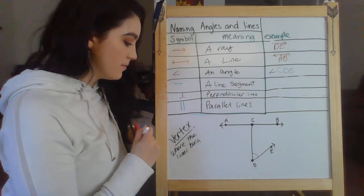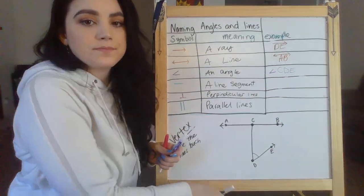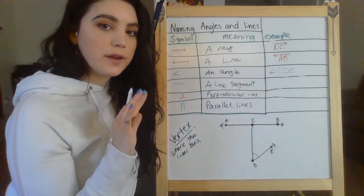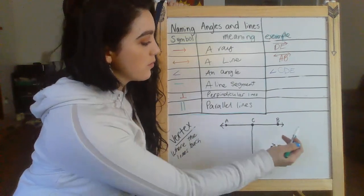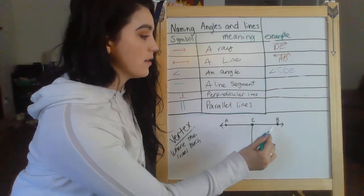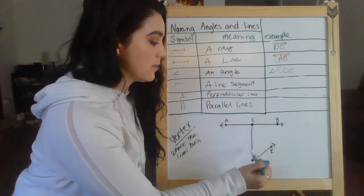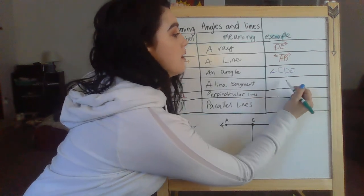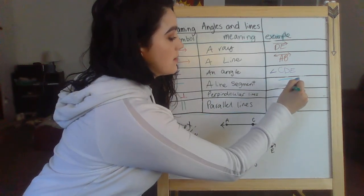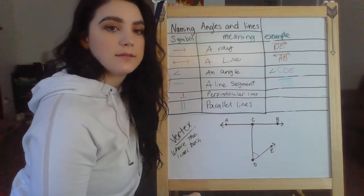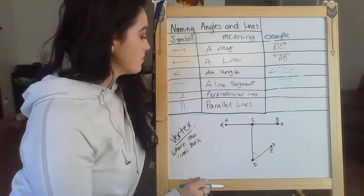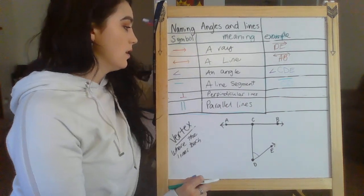Now we have the line segment. My line segment has a starting point and an ending point, no arrows. So if we look at our diagram, we're going to find the two dots that are connected. This has arrows, this has an arrow, so it's going to have to be this one here. We're going to put a straight line on top with no arrows, one end to the other. So it's called line segment CD.